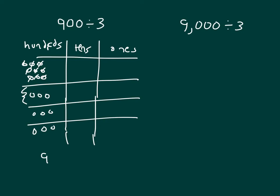So we have 9 hundreds. When we divide 9 hundreds by 3, what do we get? We get 3 hundreds. Three hundreds, in standard form, is written as 300.